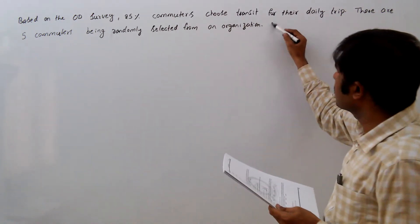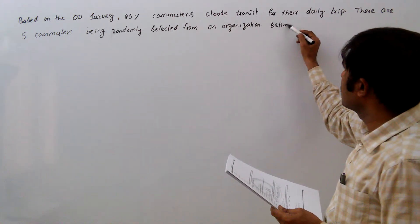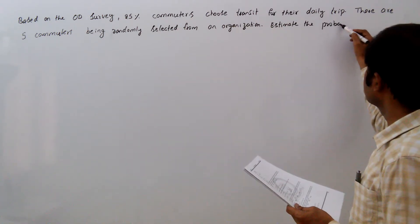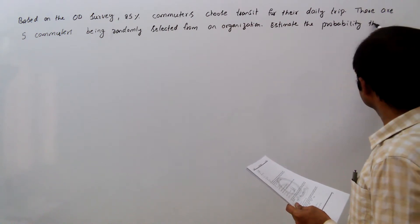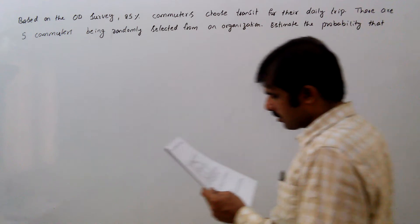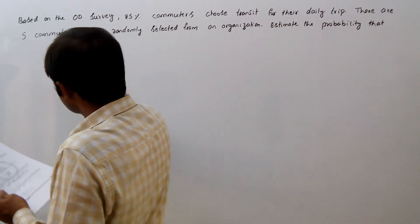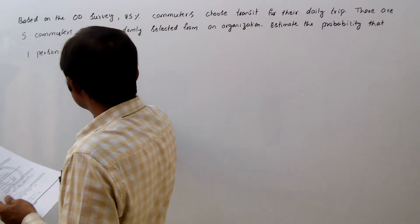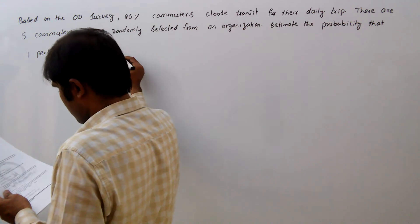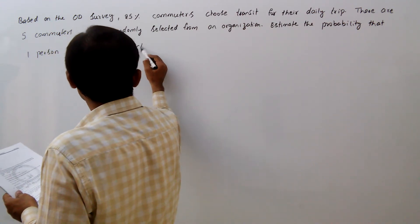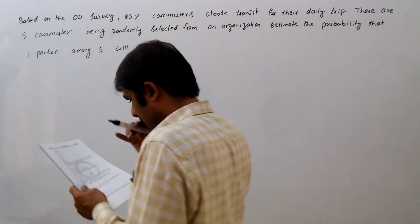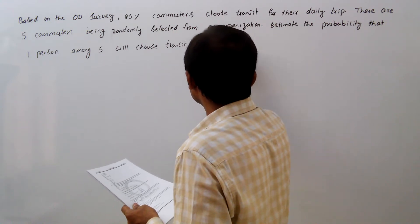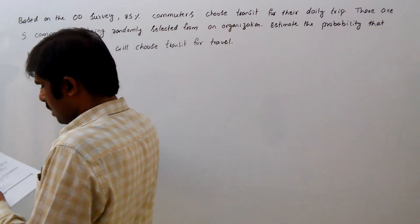Estimate the probability that one person among 5 will choose transit for travel.